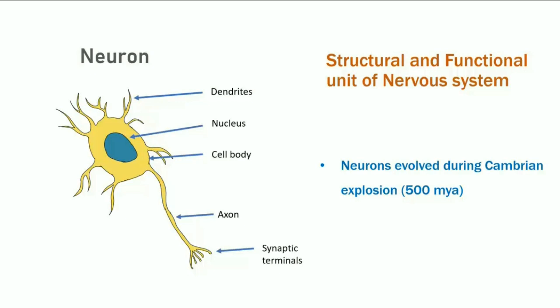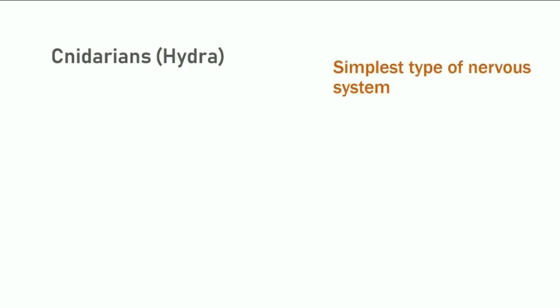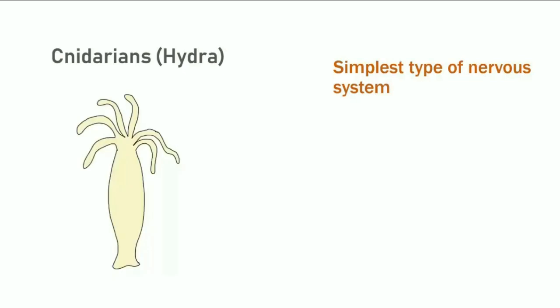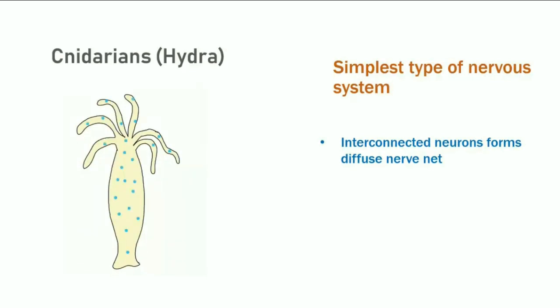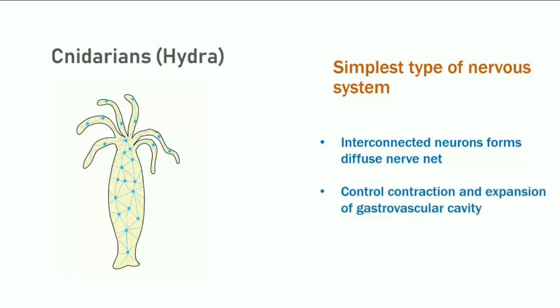In cnidarians like hydra and jellies, they have the simplest type of nervous system. In hydras, the interconnected neurons form a net-like structure called a nerve net. The nerve net controls the contraction and expansion of the gastrovascular cavity in cnidarians.